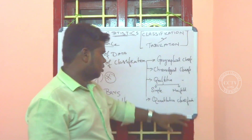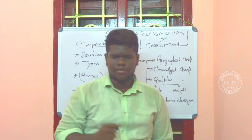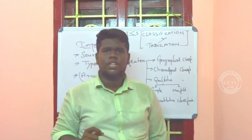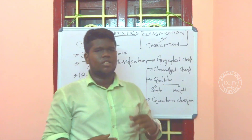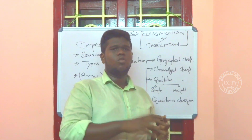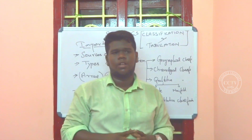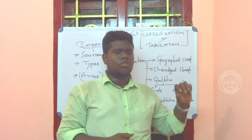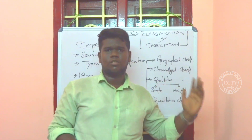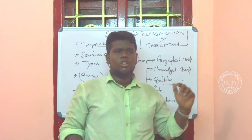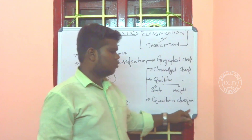Quantitative Classification — what do you compare? One number or size, such as income group. For example, from one thousand to ten thousand to twenty thousand income ranges. This is known as Quantitative Classification.